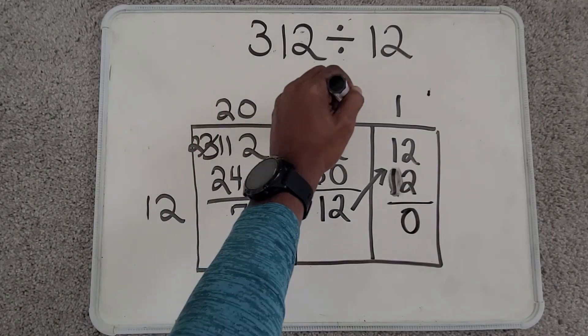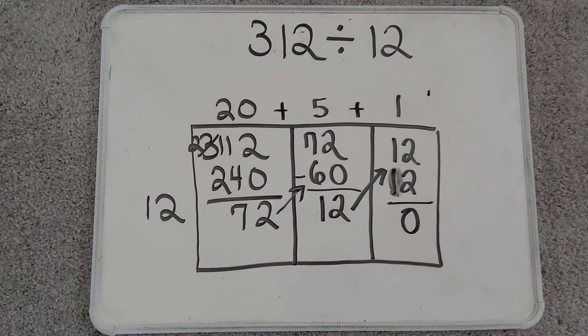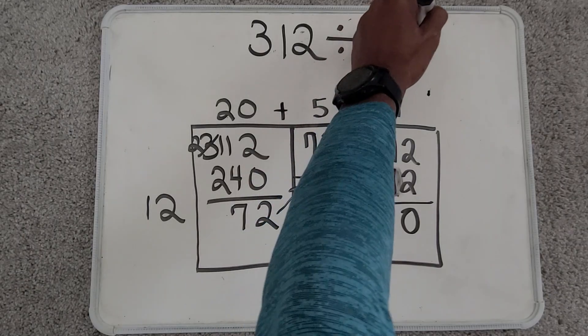Now the only thing I need to do is add my partial quotients, 20 plus 5 plus 1, to get 26.